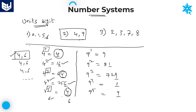What did you understand from this? Here 1, 3, 5 powers are nothing but odd numbers. For odd powers, units place value is 4. Whereas for even powers, units place value is 6.